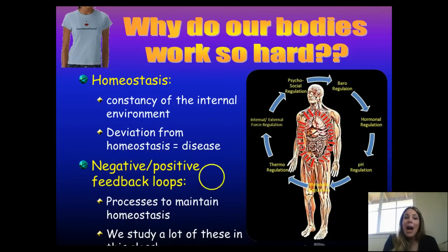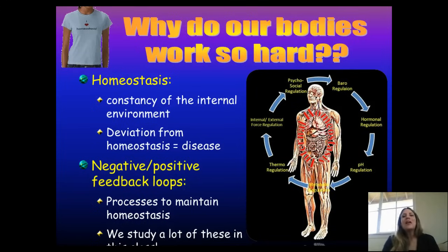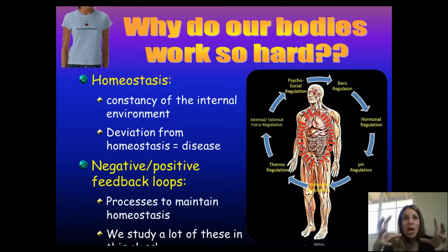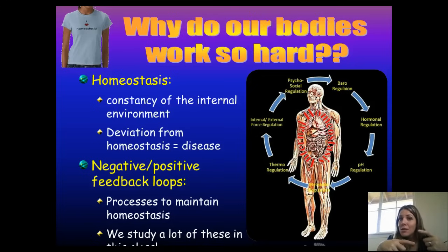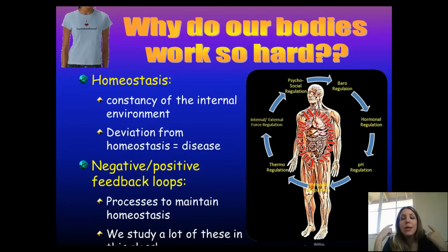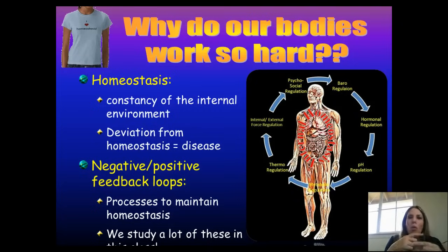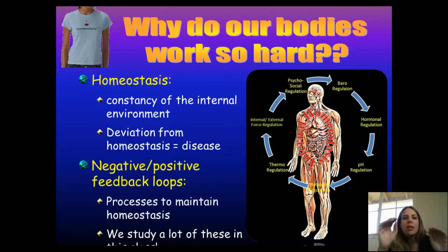There are also positive feedback loops, where it's good to have too much of a good thing. For example, when a woman goes into labor, her uterus starts to contract, and that causes more of the hormone oxytocin to be released. The uterus signals the brain to release more oxytocin, causing more contractions — stronger and stronger until the baby is born. Then the body switches to a negative feedback mechanism, which stops oxytocin production.